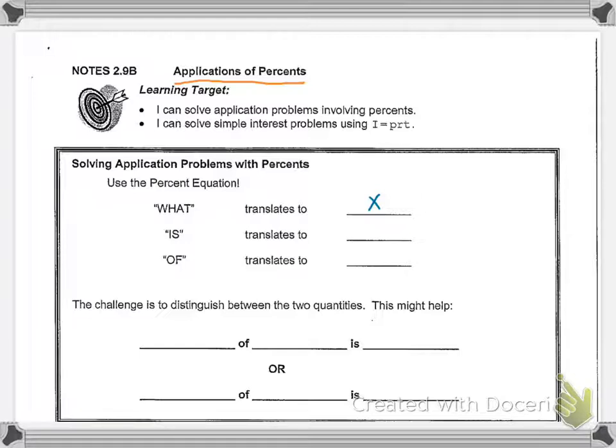So we have to remember what we learned previously with our keywords that we're going to look for. So we have what is going to be X. Anytime it says is, I'm going to write an equal sign, and of tells us to multiply. Now I'm going to have you switch up this little piece down here a little bit to kind of simplify it for ourselves.